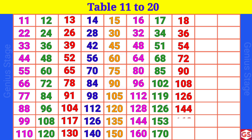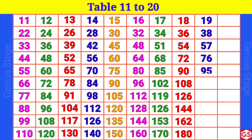18 10s are 180. 19 1s are 19, 19 2s are 38, 19 3s are 57, 19 4s are 76, 19 5s are 95, 19 6s are 114, 19 7s are 133, 19 8s are 152, 19 9s are 171.